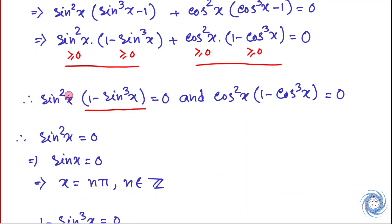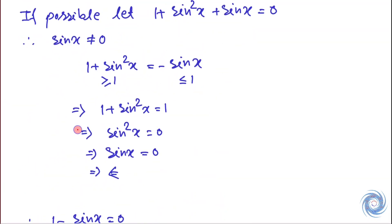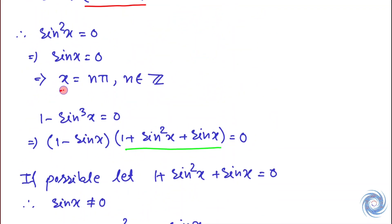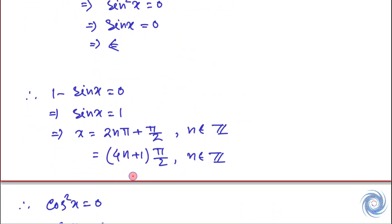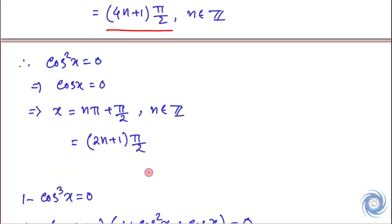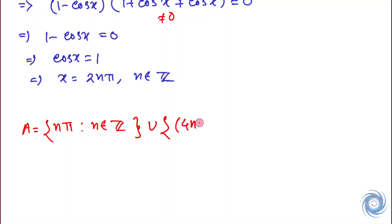Now let A be the set of solutions for the first equation. Then we have A = {x = nπ, n ∈ ℤ} union {x = (4n+1)π/2, n ∈ ℤ}. And let B be the set of solutions for the second equation.